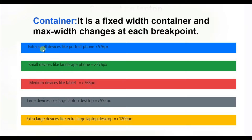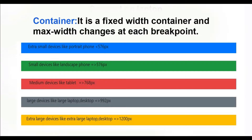There are five responsive breakpoints. First: extra small devices like portrait phones, less than 576px. Second: small devices like landscape phones, equal to or greater than 576px. Third: medium devices like tablets, equal to or greater than 768px. Fourth: large devices like large laptops and desktops, equal to or greater than 992px. Fifth: extra large devices like extra large laptops and desktops, equal to or greater than 1200px. All these are very important breakpoints in the container class.